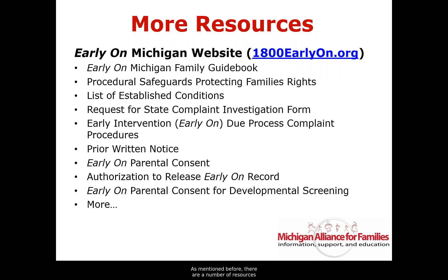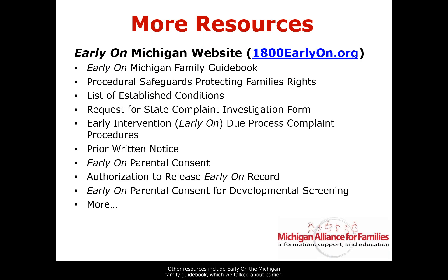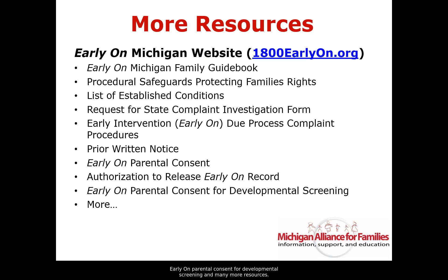There are a number of resources helpful about procedural safeguards. The Early On Michigan website is provided on the screen. Other resources include the Early On Michigan Family Guidebook, the Procedural Safeguards Protecting Families Rights document, a list of established conditions, a Request for State Complaint Investigation form, an Early On Due Process Complaint Procedures form, Prior Written Notice, Early On Parental Consent, Authorization to Release Early On Records, Early On Parental Consent for Development Screening, and many more resources.